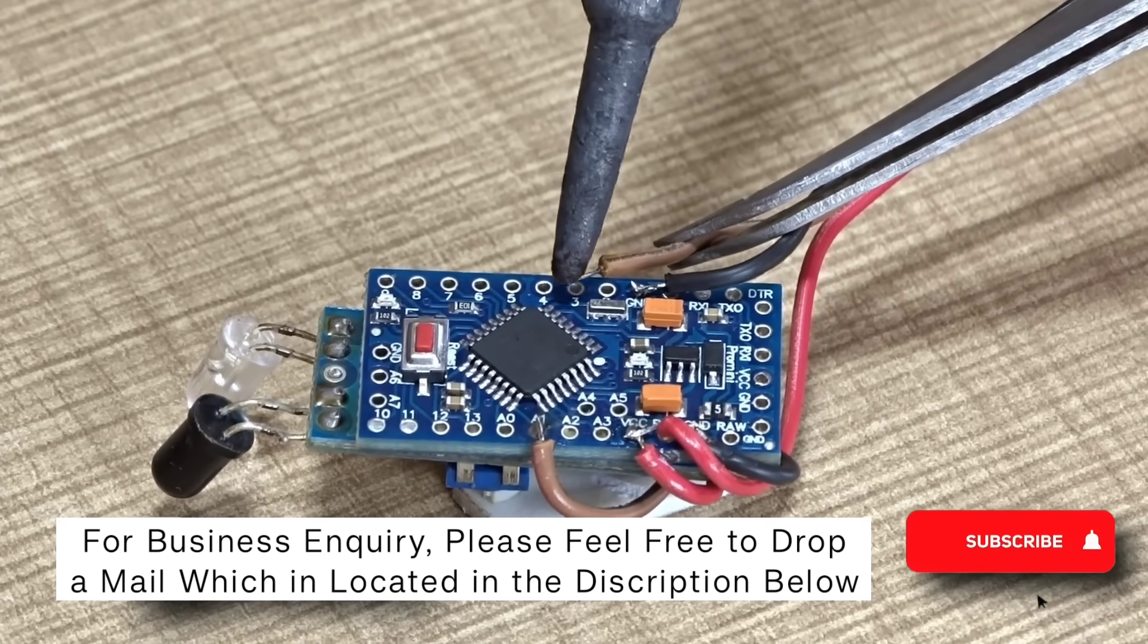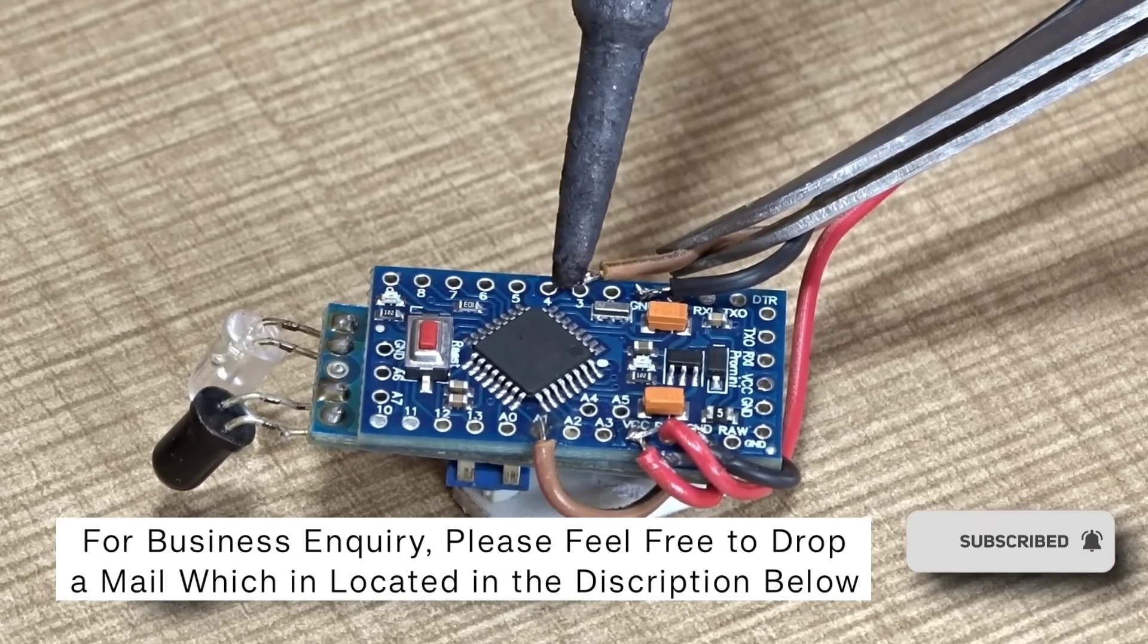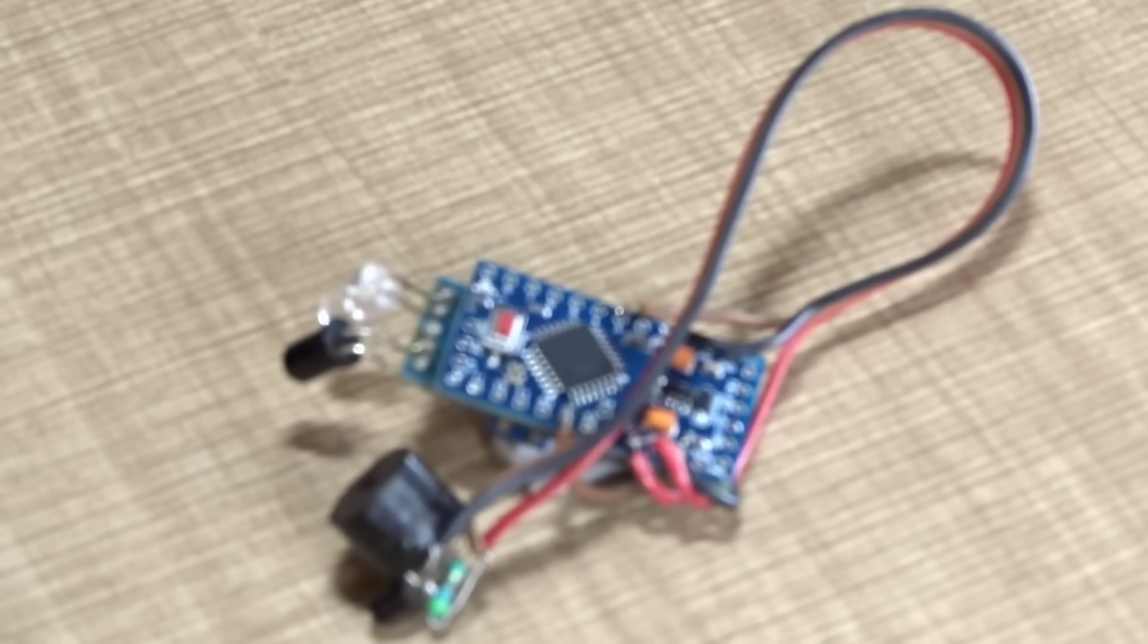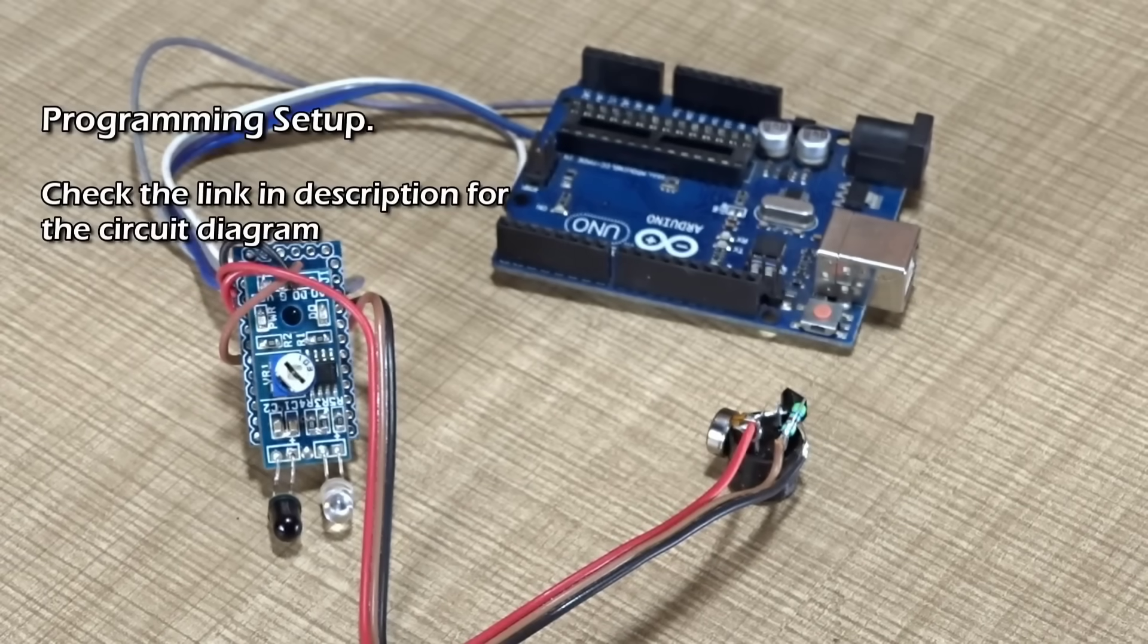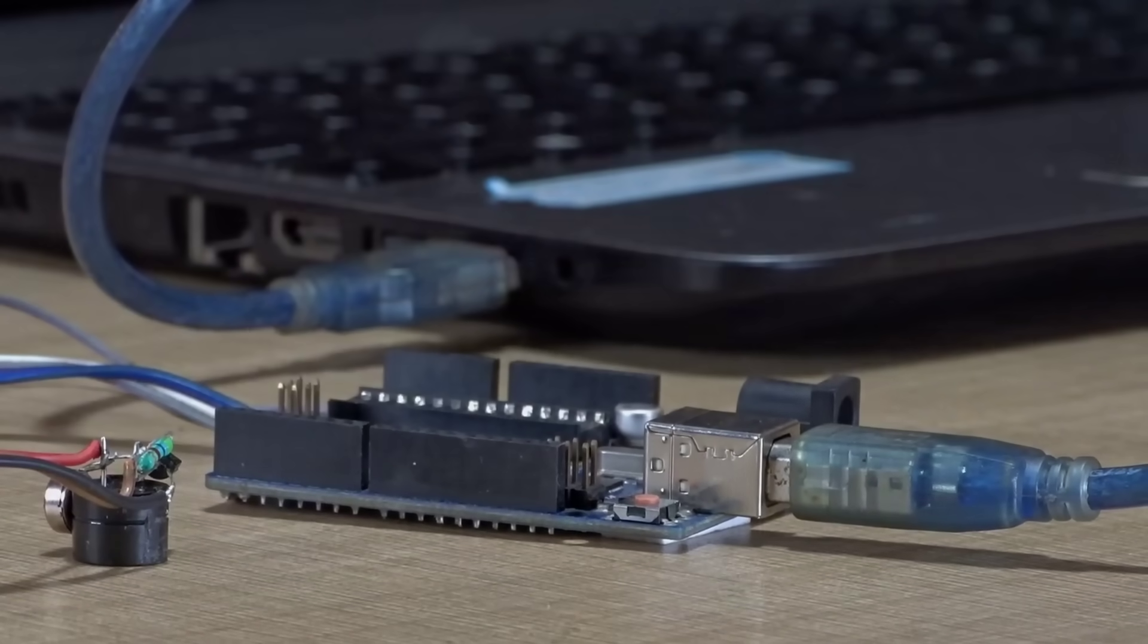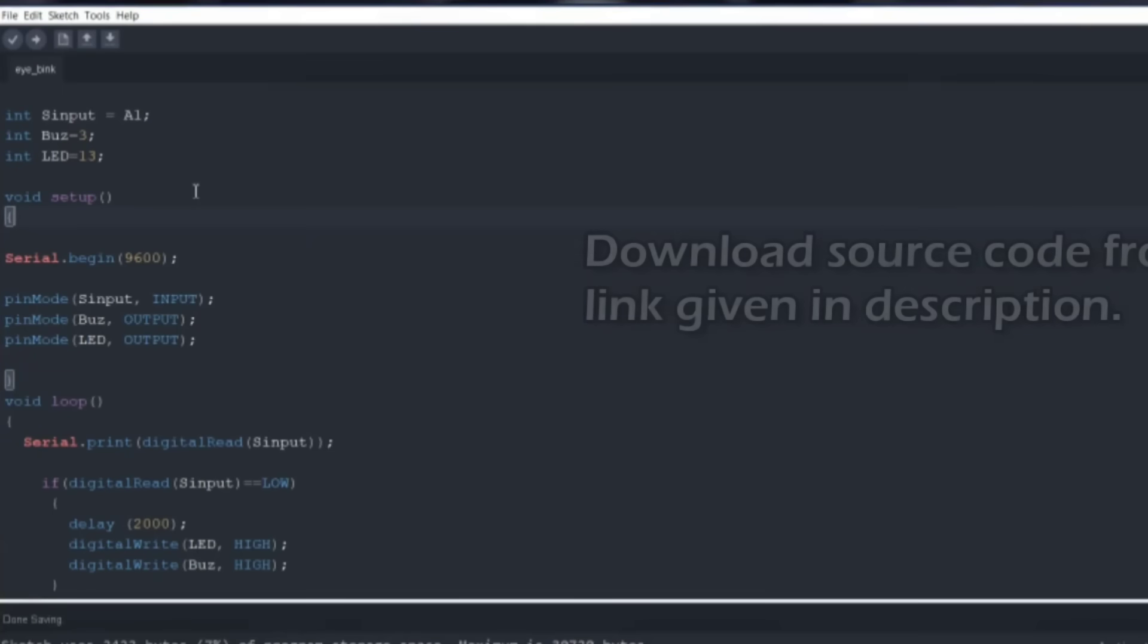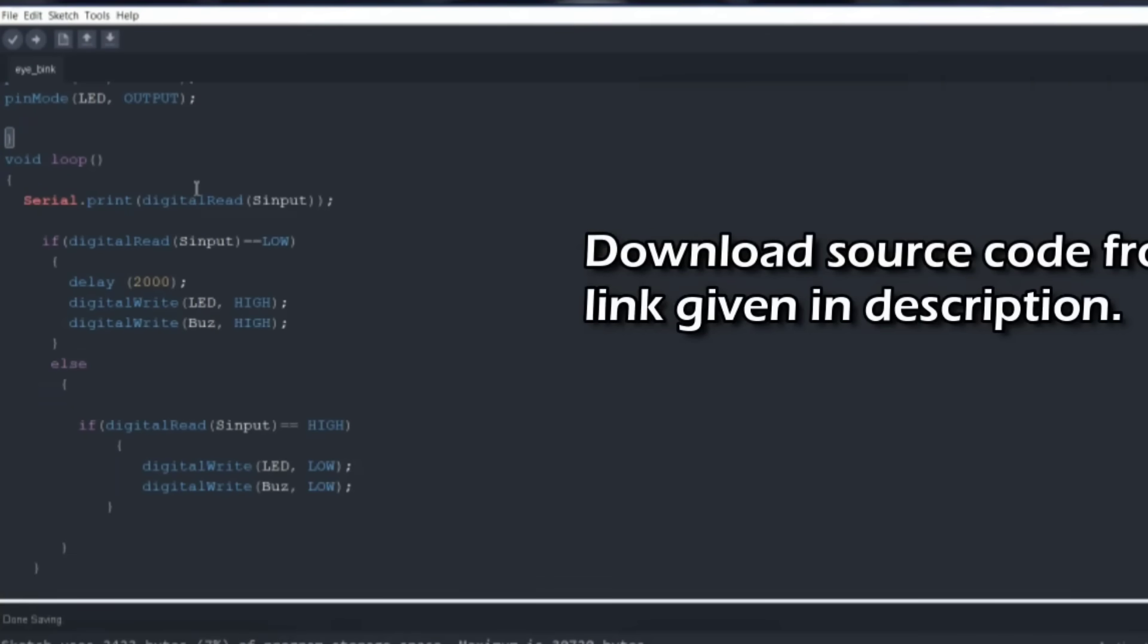Each wire and pin connection is crucial for proper operation. Make sure you double check the VCC, GND, and signal lines for correct placement. Once all connections are completed and verified, we'll move to the programming part. Connect the Arduino Pro Mini to your laptop or PC using an appropriate USB to serial converter. Then we'll upload the source code, which is written specifically to handle the sensor data and trigger the buzzer as needed.